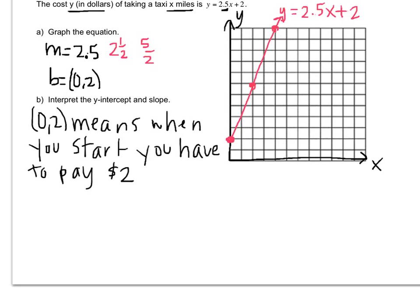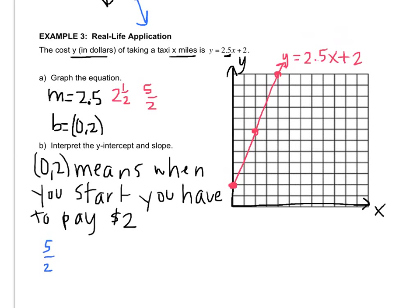Speaking of that, they want to know what the slope is. Well, the slope is 2.5 or 5 over 2. So, 5 over 2. Remember, 5 was representing our y value and 2 represented our x value.